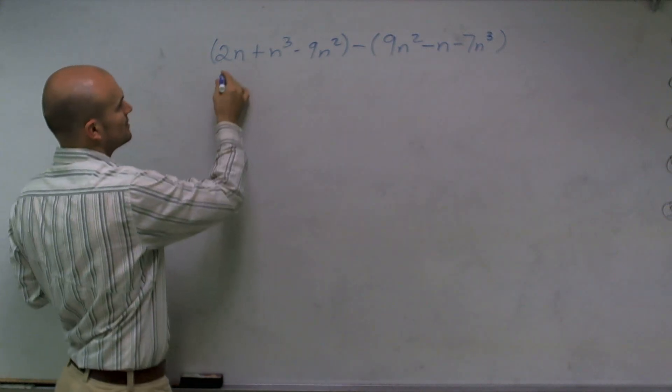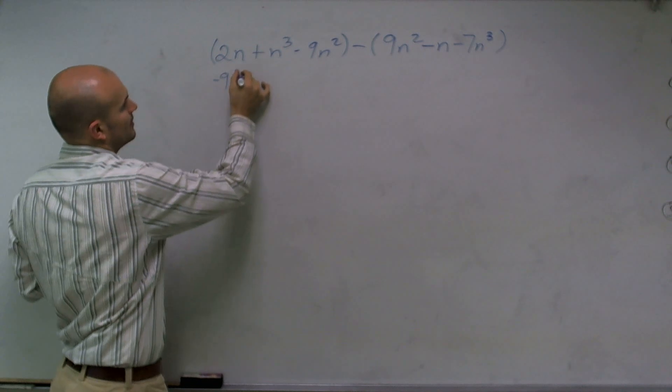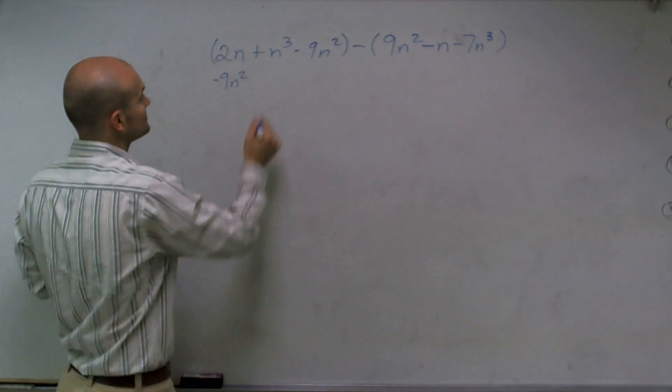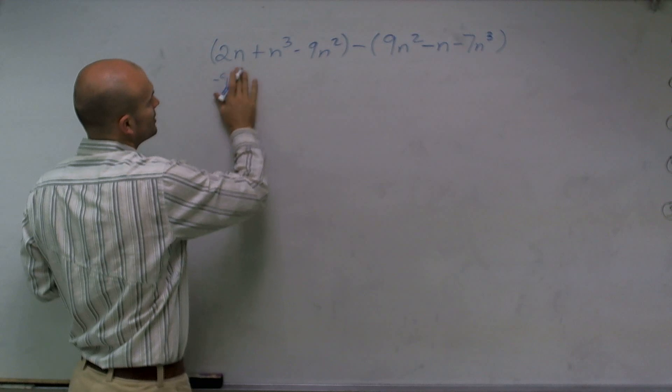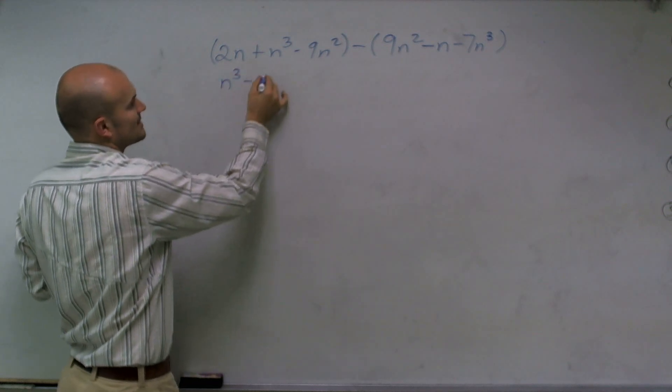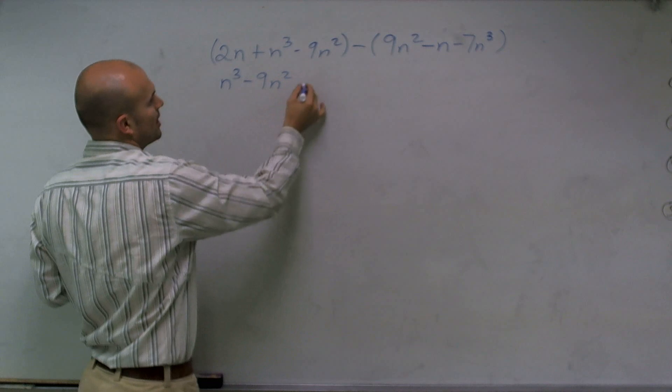So what I'm going to do is I'm going to rewrite both of these polynomials in descending order so that I can make sure, actually that's not first, n cubed is first, that I'm using the same order of my polynomials.